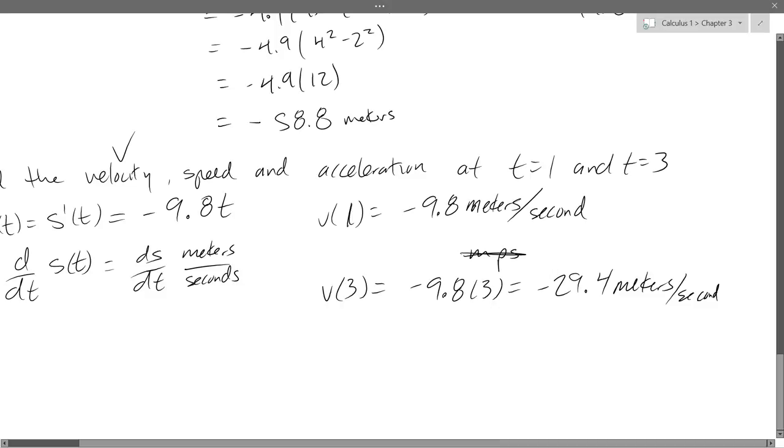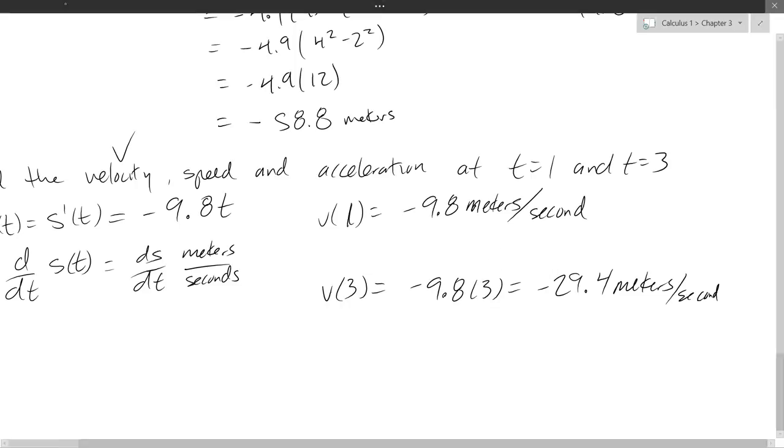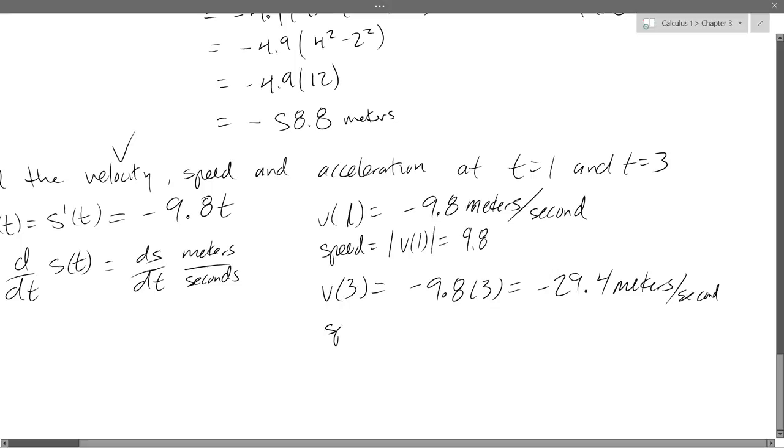Speed. How is speed related to velocity? Speed is just the absolute value or the magnitude of velocity. You really don't want to use s for speed because we've already used s for our original function. So I'm just going to write the whole word. Speed equals absolute value of, I want it at 1 second, which is just positive 9.8. And speed at 3 seconds, absolute value of 3, which is positive 29.4.